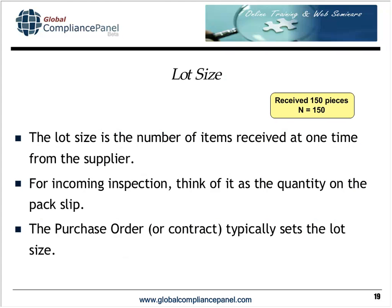Lot size is the number of items received at one time from the supplier. At incoming inspection, think of this as the quantity on the packing slip — what was received at the receiving dock and transferred to the incoming inspection station. The purchase order or contract typically sets the lot size. In our example, we received 150 pieces, so N = 150.